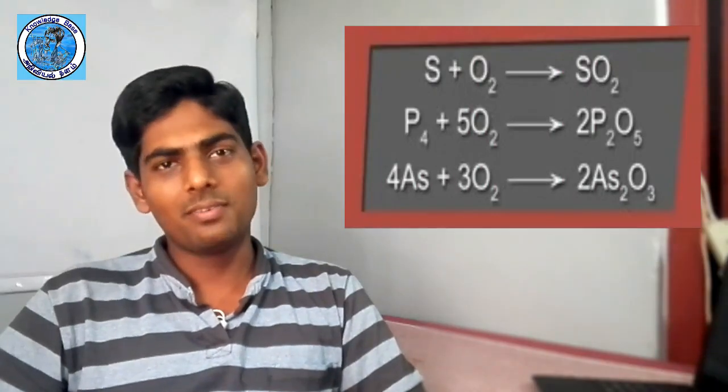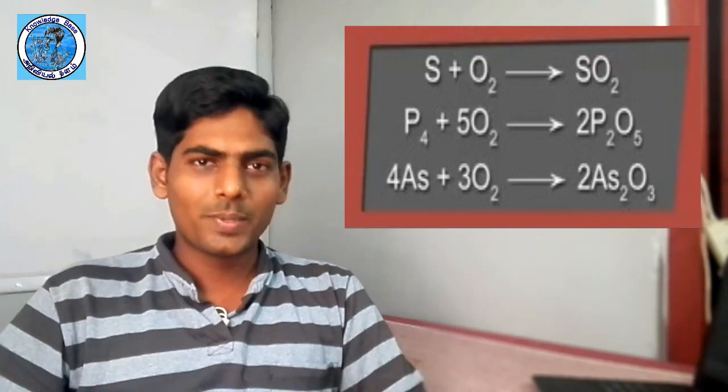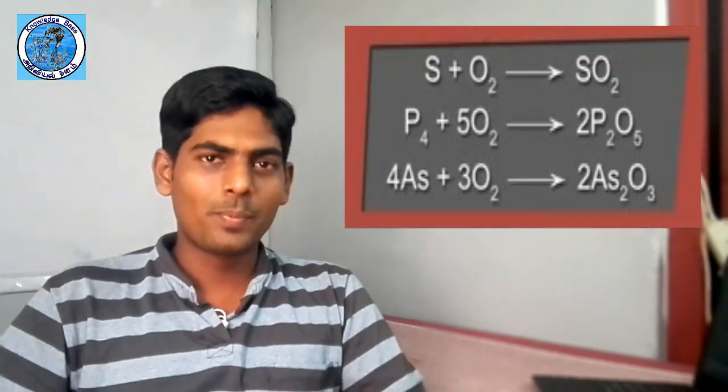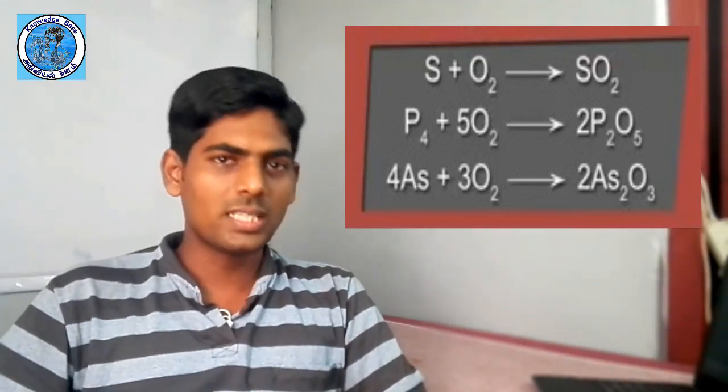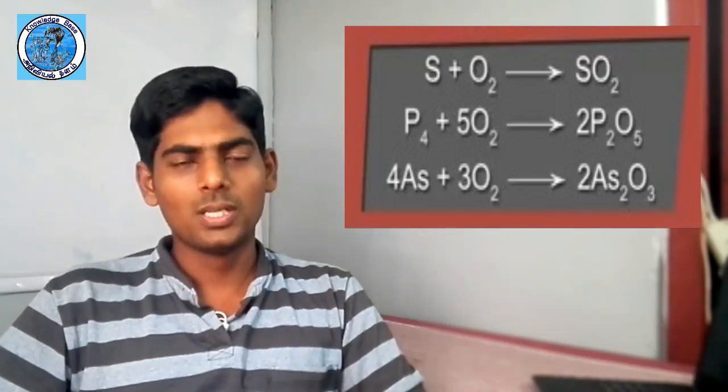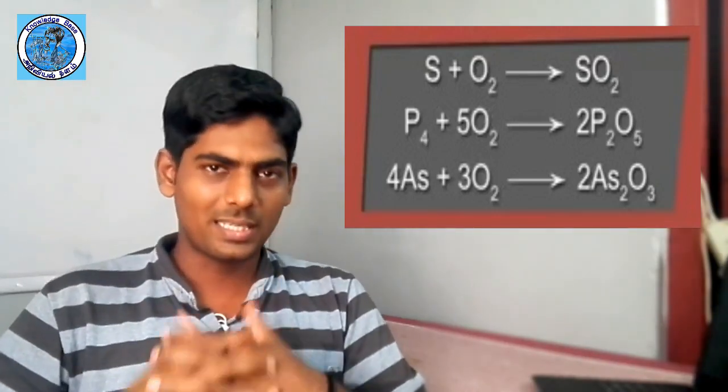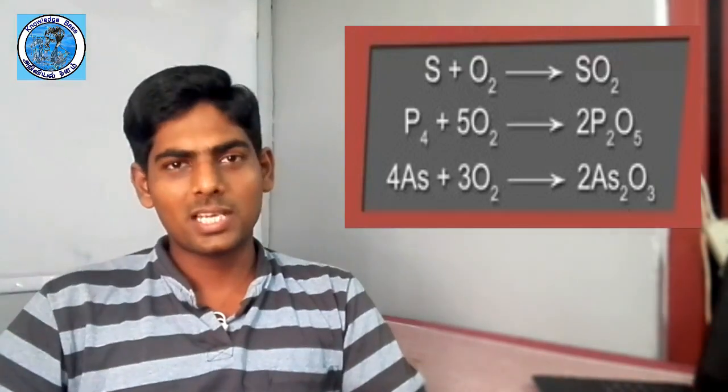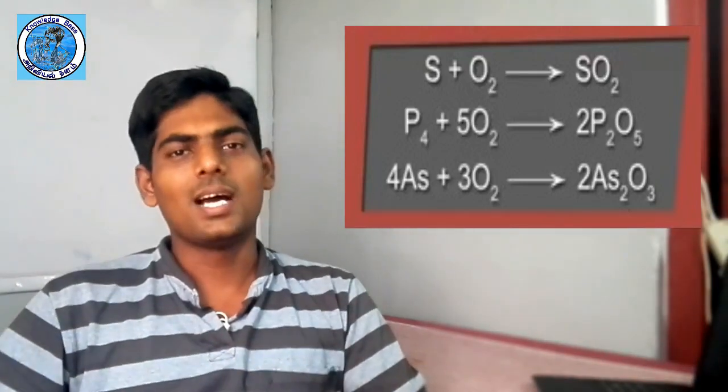This involves sulfur, arsenic, and phosphorus. It produces the oxide of sulfur. It has also gas and is released. The gas is also released and exists as toxic gas.